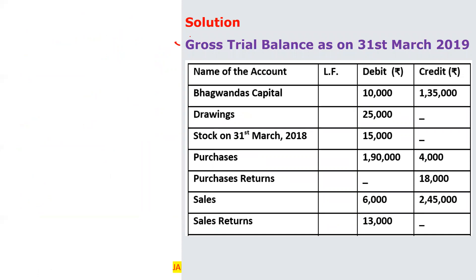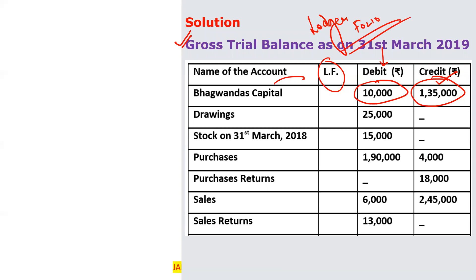In the gross trial balance as on 31st March: Bhagwan Das's Capital — 10,000 on the debit side and 1,35,000 on the credit side. LF stands for Ledger Folio — many students don't know this, so please remember it. Drawings: 15,000 and 25,000 on the debit side only, as there is no credit. Purchases: 1,90,000 debit and 4,000 credit. In the net trial balance for purchases, we write 1,86,000 on the debit side.